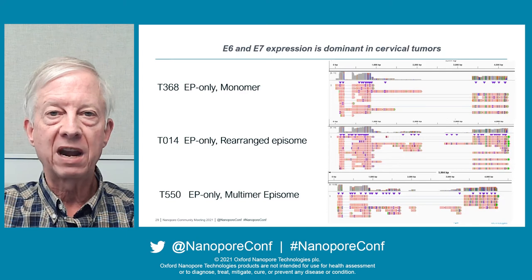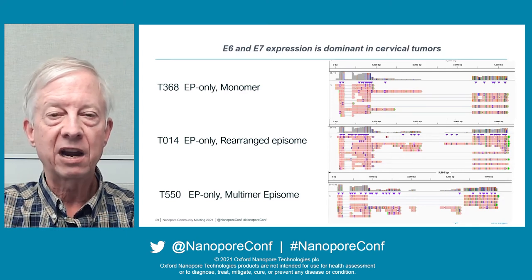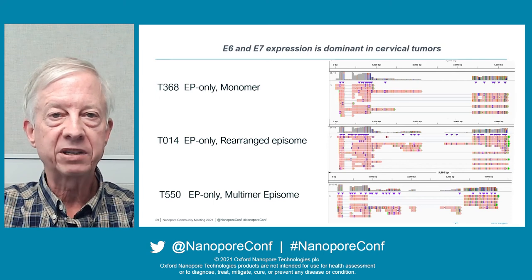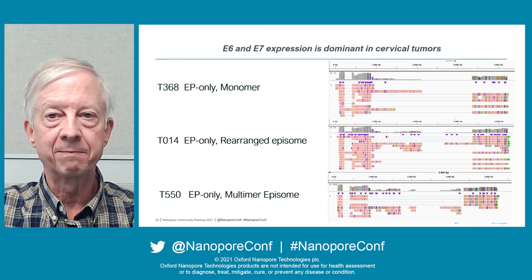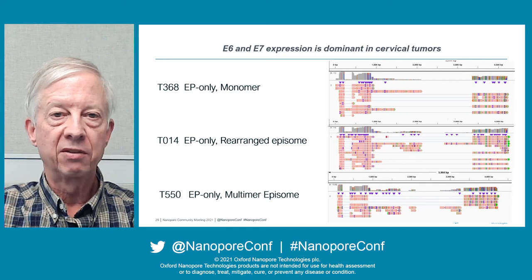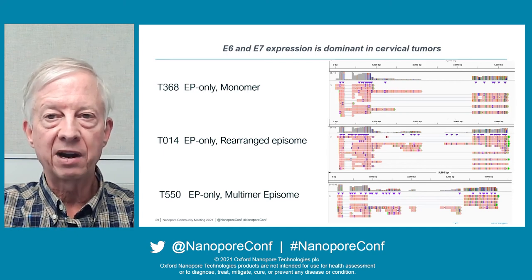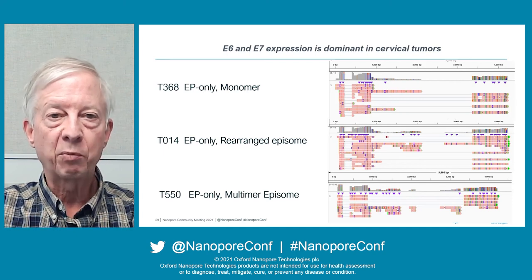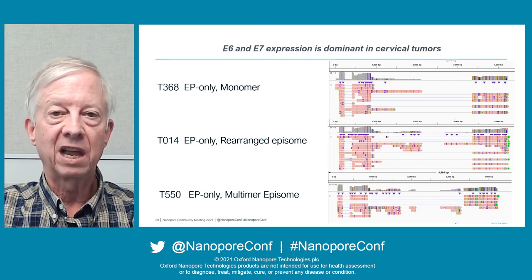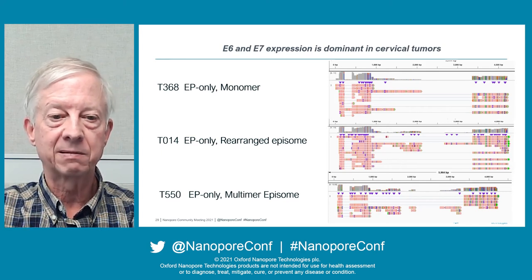We obtained RNA from the cervical tumors Nicole described and carried out PCR cDNA sequencing with barcoding. Here are three representative samples of tumors with only episomal DNA: one with monomer episomes on top, one with rearranged episomes in the middle, and one with multiple episomes on the bottom. In all three, like the SNU1000 cell line, E6 and E7 expression predominates.